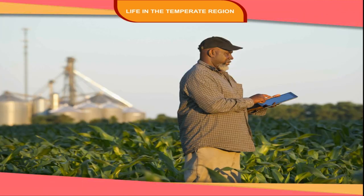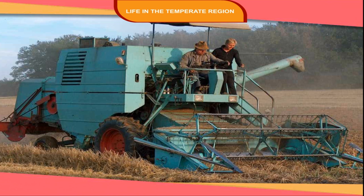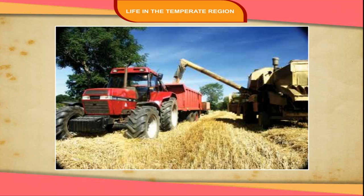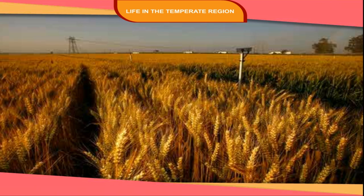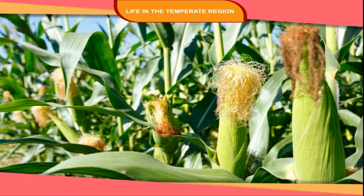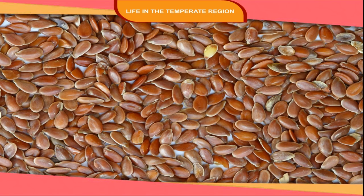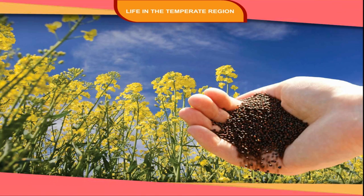People: People are very hard-working and have harnessed technology to utilize their rich natural resources. Scientific methods of cultivation and the use of tractors, harvesters and combines have made this region a surplus food producer. This is why they are called the granaries of the world. Most of the produce is sold as farming is commercial in nature. Apart from wheat and corn, other crops grown include barley, oats, flax and oilseeds.